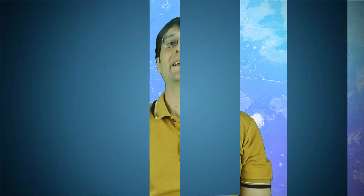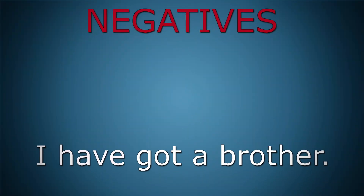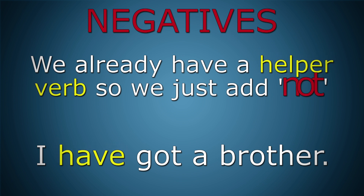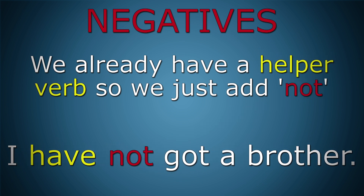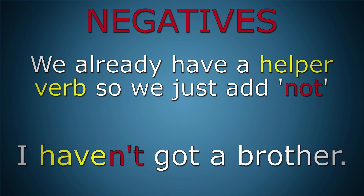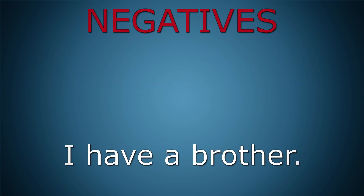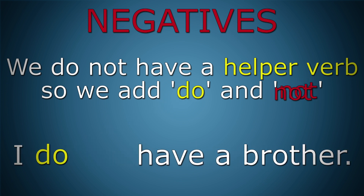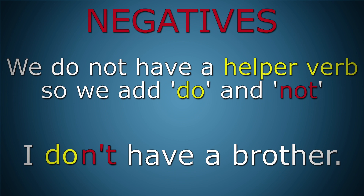Let's look at making negatives. In our first example we already have a helper verb, so we just add not and it becomes I have not got a brother, or I haven't got a brother. In our second example we do not have a helper verb, so we add do and not and it becomes I don't have a brother.